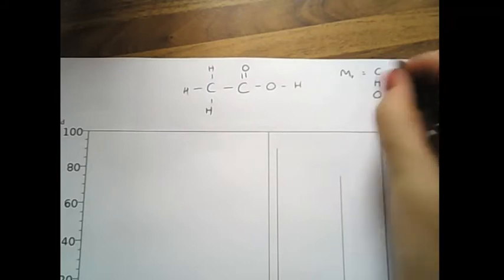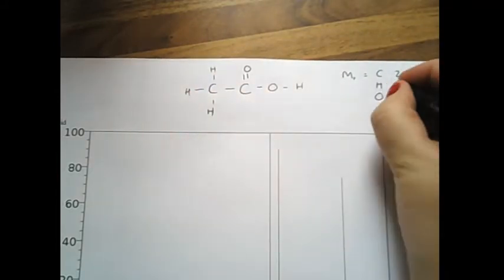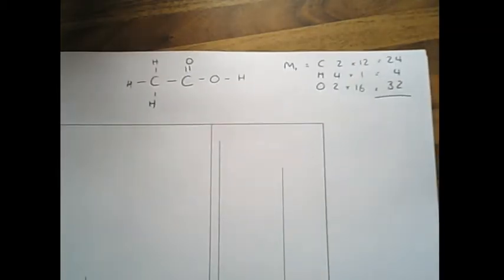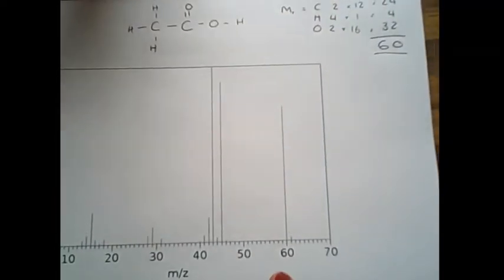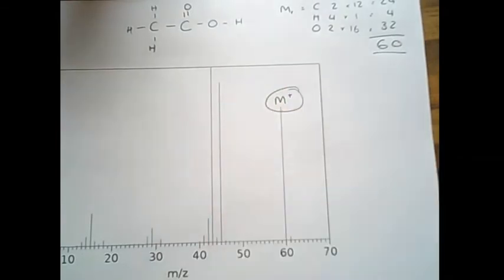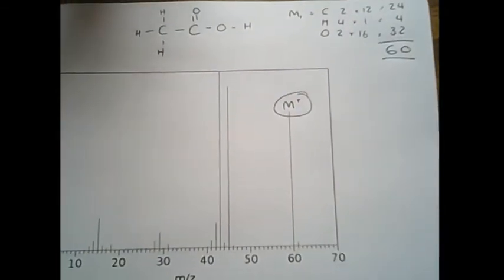Add that up. Molecular ion peak will be 60, which if we have a look at the diagram, yeah, there it is at 60. That is your molecular ion peak. Love it. What else have we got? What fragments?